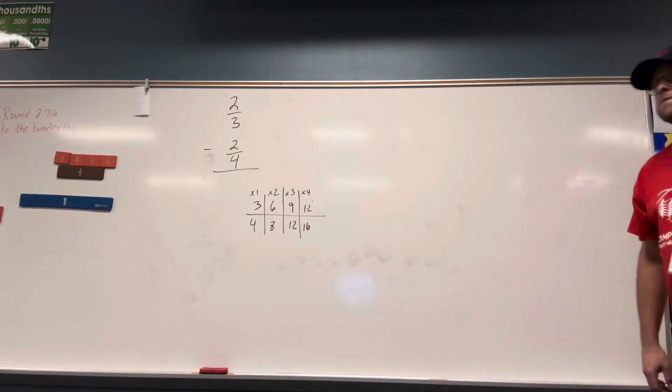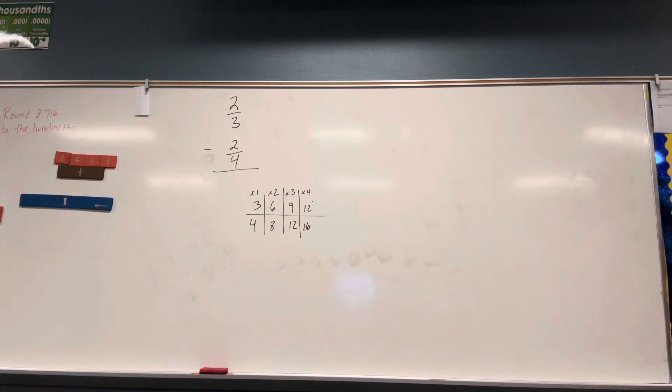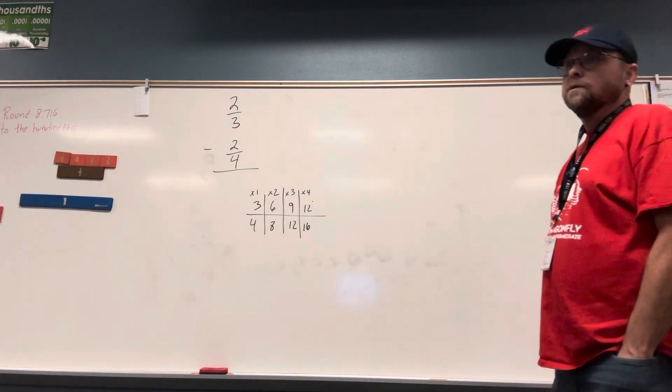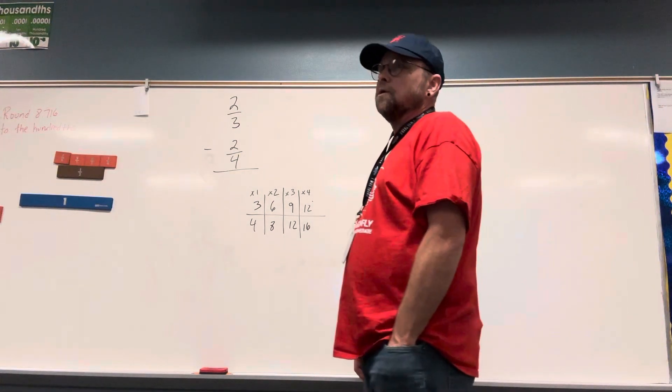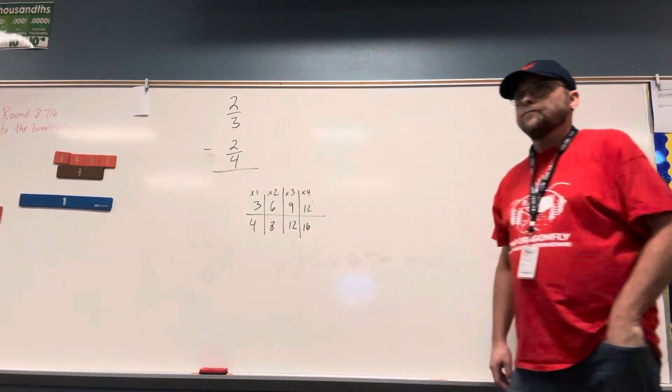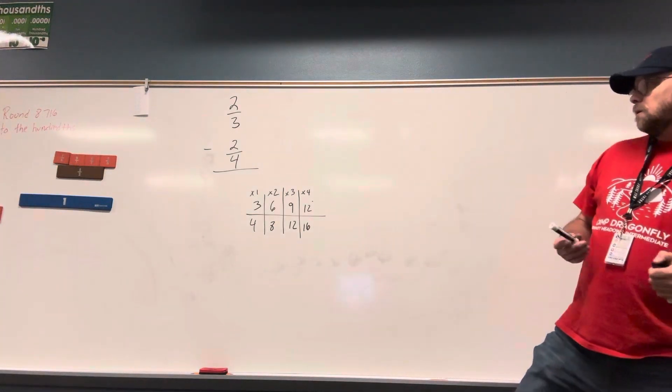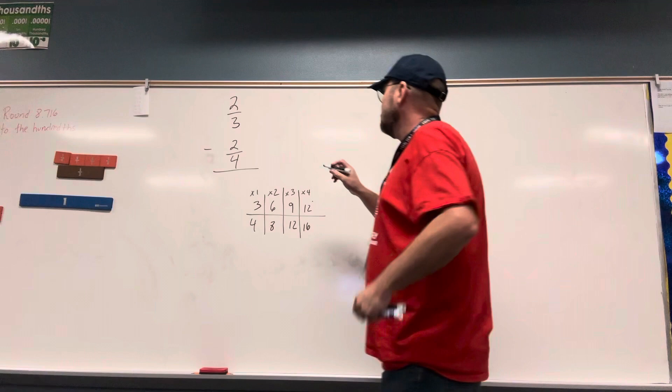2 thirds minus 2 fourths. Common denominator is what, Nadia? 12. So our common denominator equals 12.